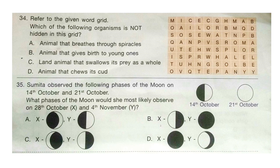Question 35: Sumita observed the following phases of the moon on 14th October and 21st October. What phases of the moon would she most likely observe on 28th October (X) and 4th November (Y)? The correct answer will be option B.